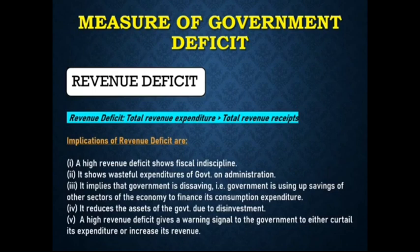Third, it implies that government is dis-saving — that is, the government is using up savings of other sectors of the economy to finance its consumption expenditure. Fourth, it reduces the assets of the government due to disinvestment. And lastly, a high revenue deficit gives a warning signal to the government to either curtail its expenditure or increase its revenue.